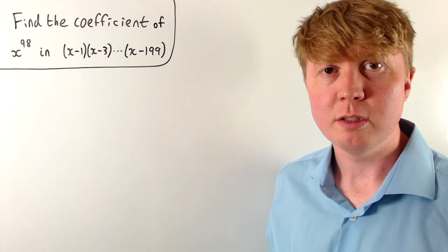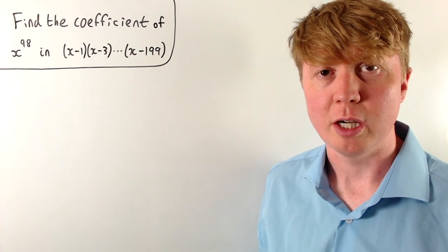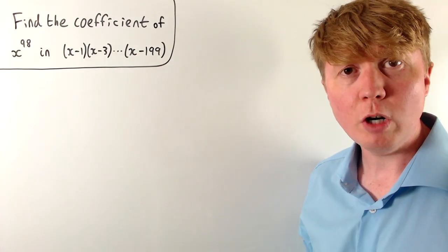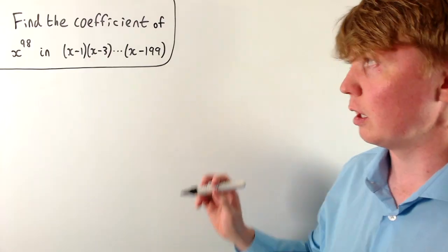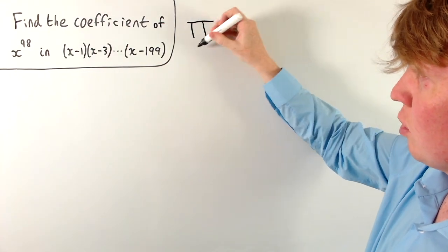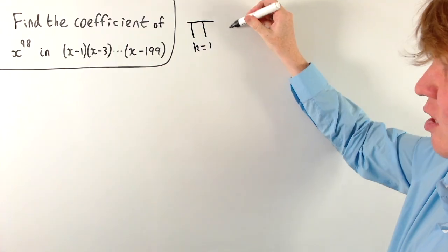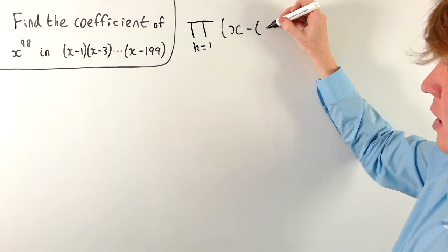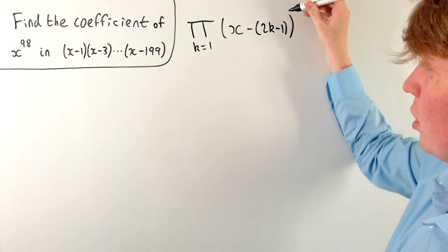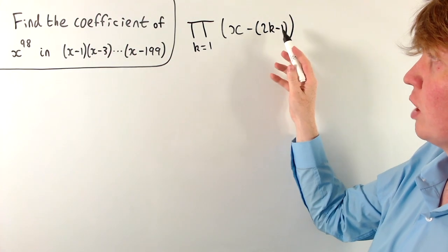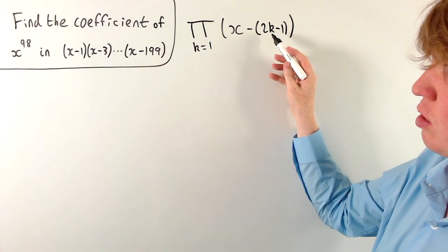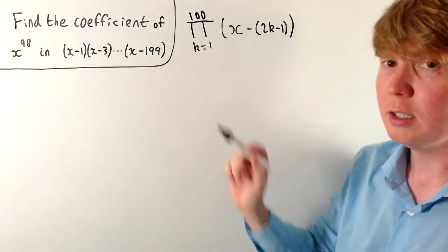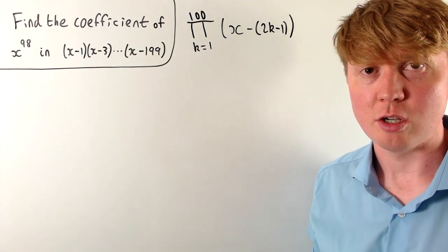We're going to solve this problem where we need to find the coefficient of x to the power of 98 when we expand out all of these brackets. We can write this product more concisely using product notation: the product over k from 1 to 100 of (x minus (2k-1)). Substituting k=1 gives 1, then 3, and so on, all the way up to k=100, giving us the 199 term. So we have 100 terms being multiplied together.